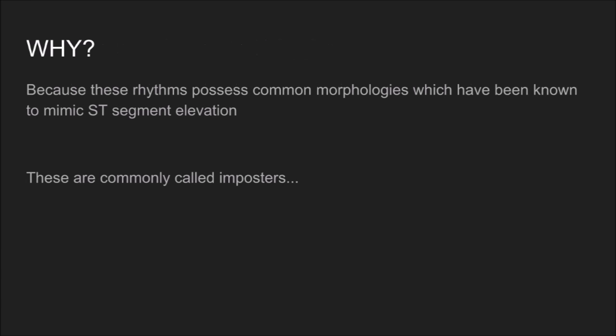So why do we even need this? Why does it matter? It's because these rhythms possess common morphologies which have been known to mimic ST segment elevation. New onset left bundle branch block used to be criteria to go to the cath lab — to alert the cath lab and have everybody waiting for you. But what we found is about 15% of those new onset left bundle branch blocks were actually due to an MI right there at that point in time. So we developed this list of things called imposters for STEMIs, which prevent us from calling out transmural MIs when we see them. But Sgarbossa's criteria solves that problem.